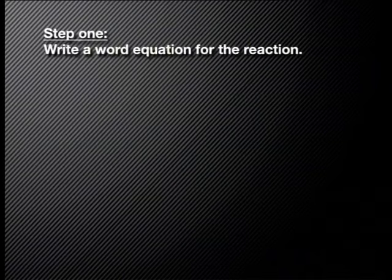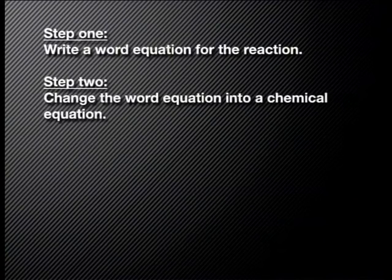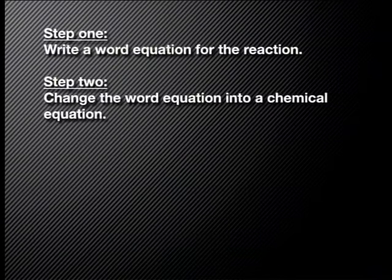Let's recap the steps to writing a balanced reaction equation. Step 1: Write a word equation for the reaction. Reactants are placed on the left, products on the right, and in the middle, the arrow. Step 2: Change the word equation into a chemical equation. This is where your knowledge of elemental symbols and of writing formulae will be most useful.